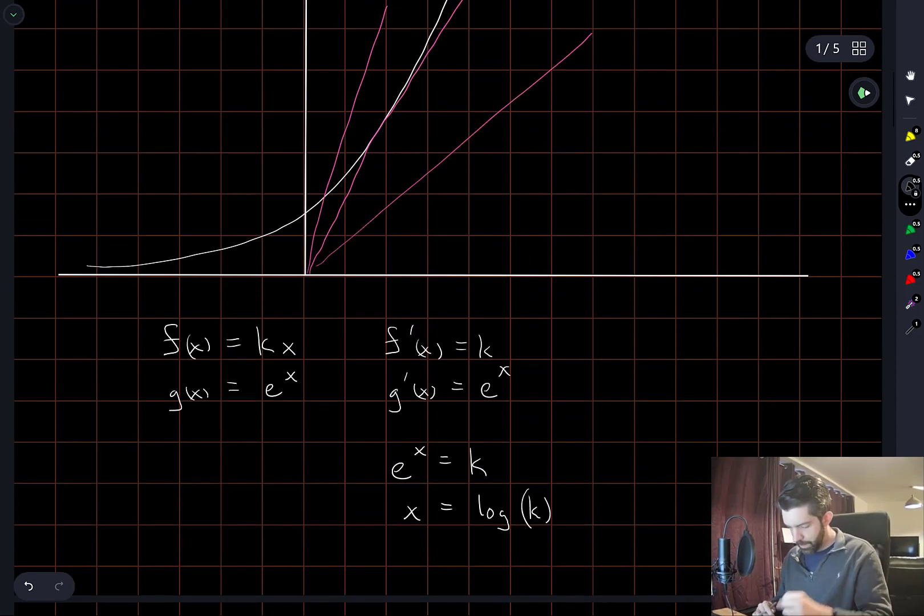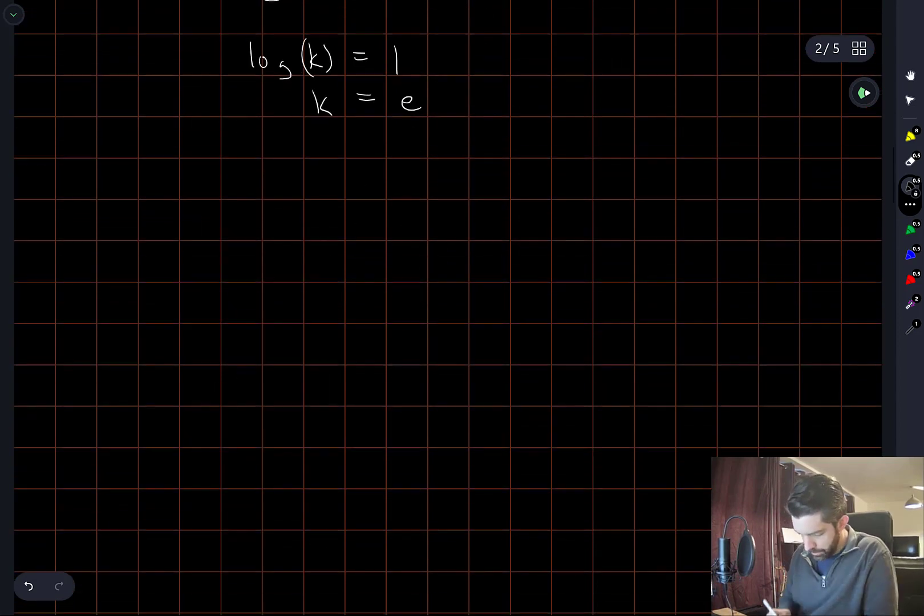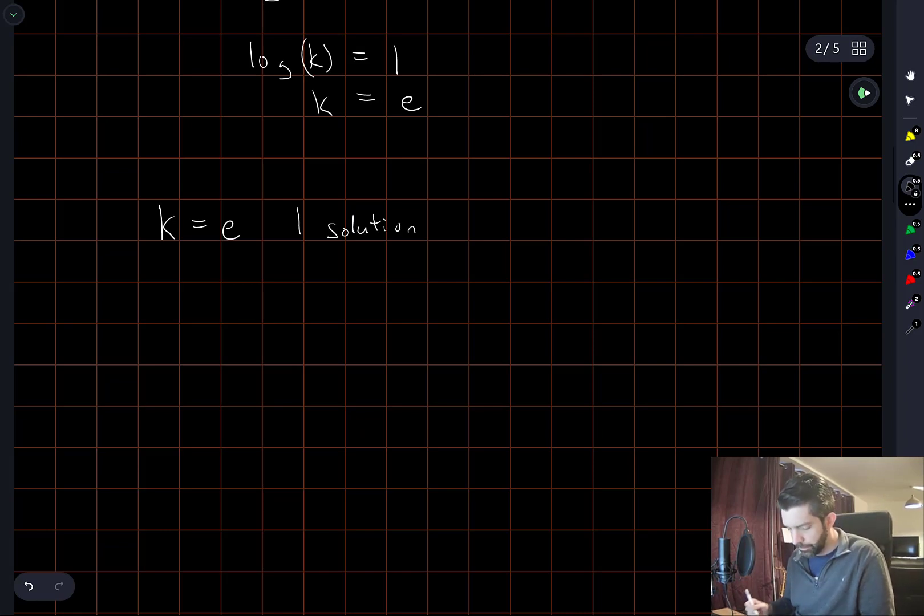All right. So this says that when k is equal to e, there's one solution, right, because this will give us the solution which is tangent. When k is greater than e, we will have two solutions.